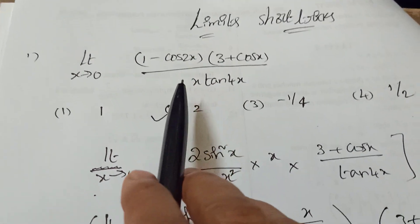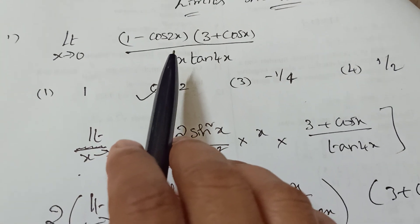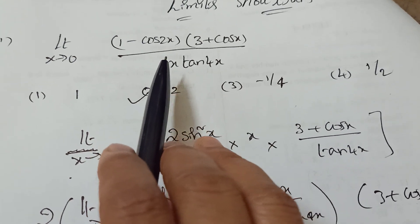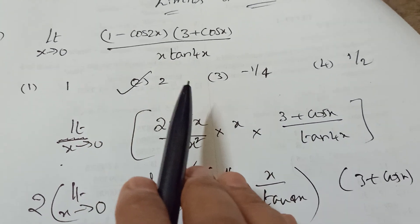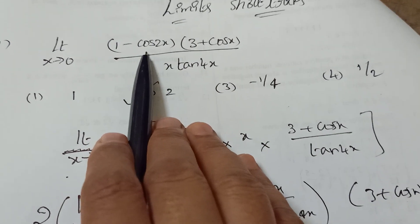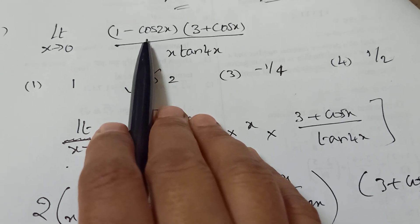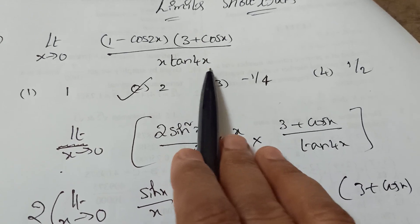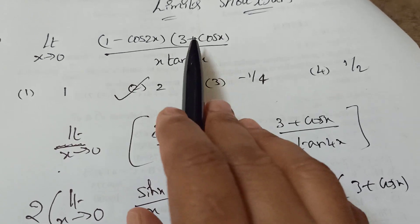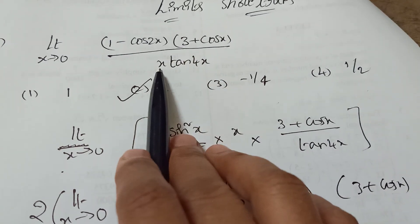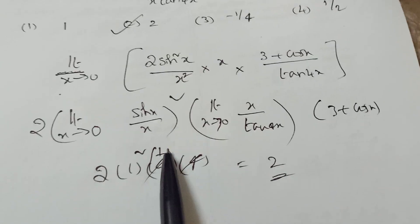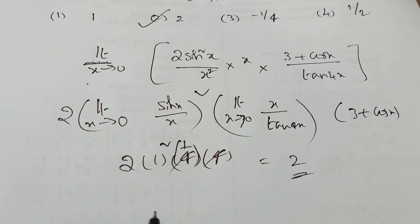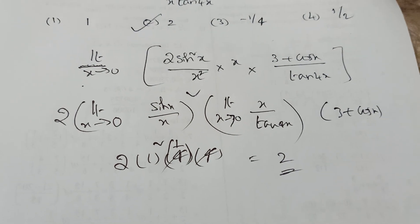It's very easy once you know the formulas. Trigonometric formulas are compulsory: 1 − cos2x = 2sin²x, and 1 + cos2x = 2cos²x. If tan4x appears but x is not in the denominator, multiply and divide by x. In one step you will get the answer easily.